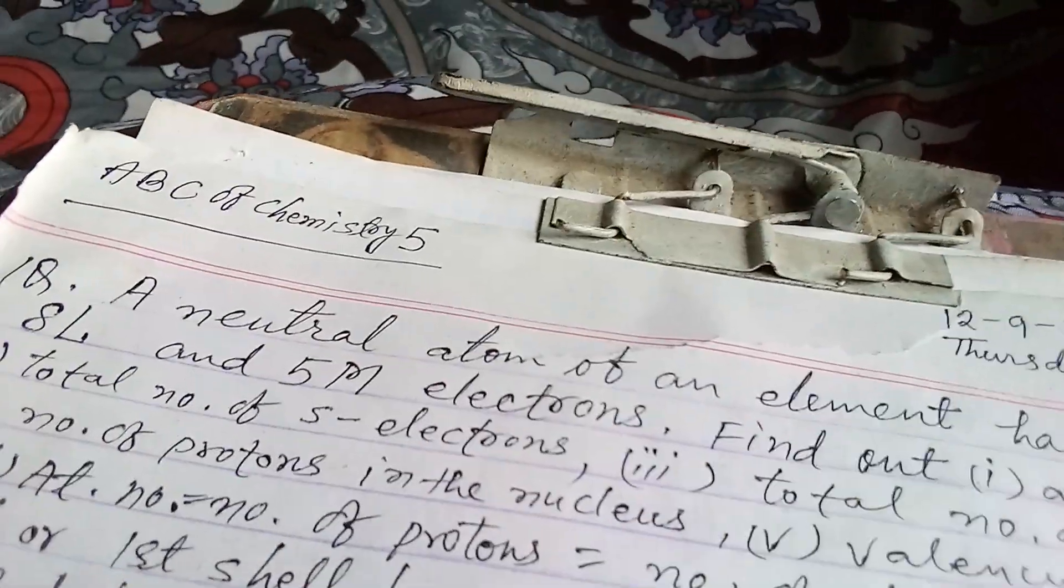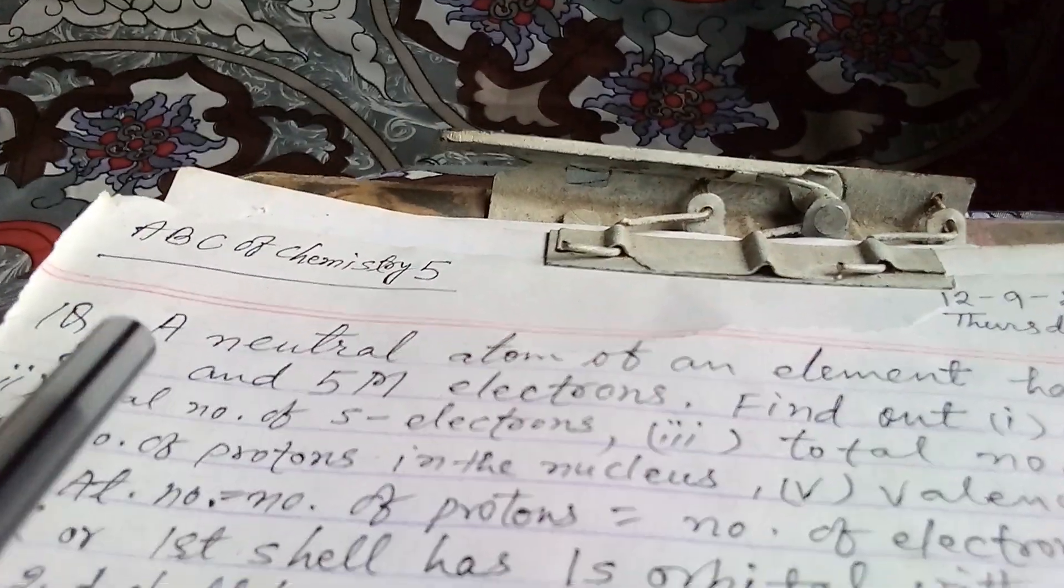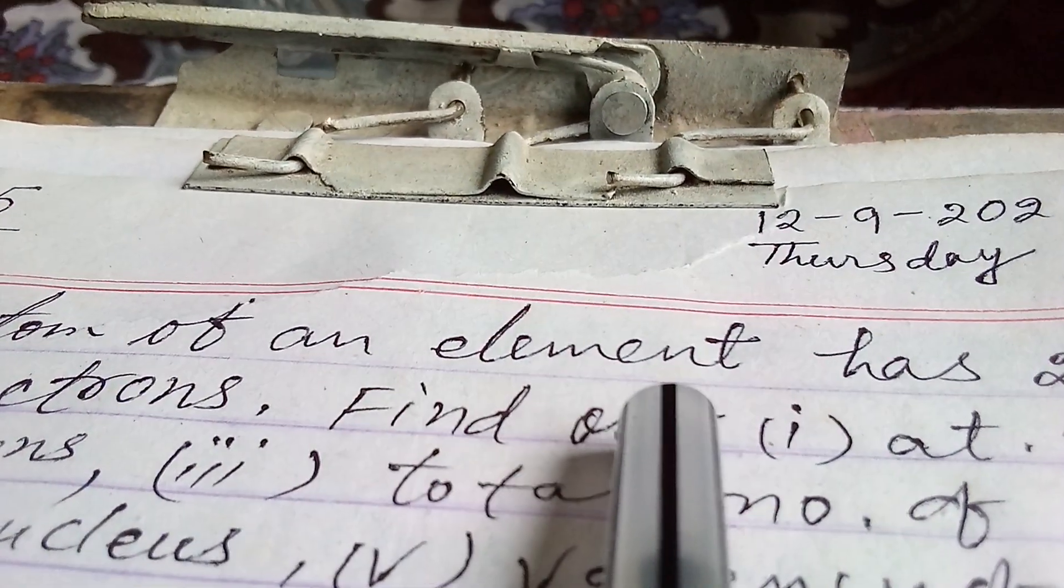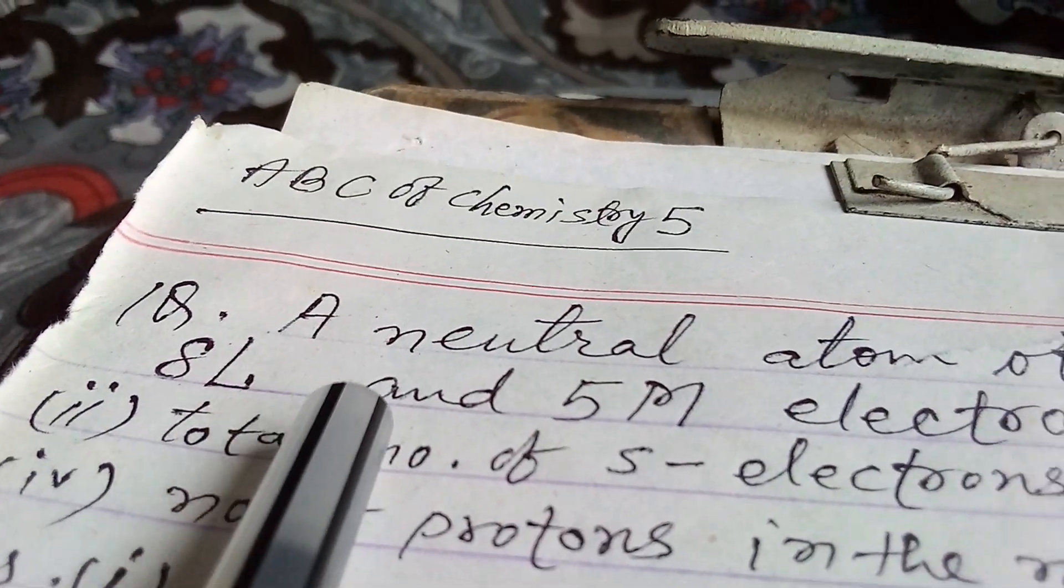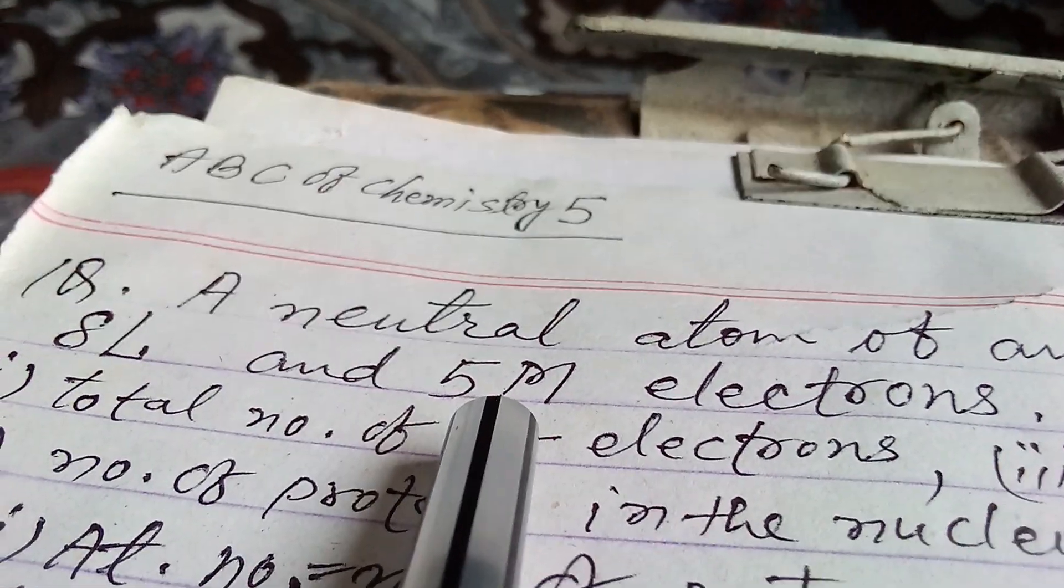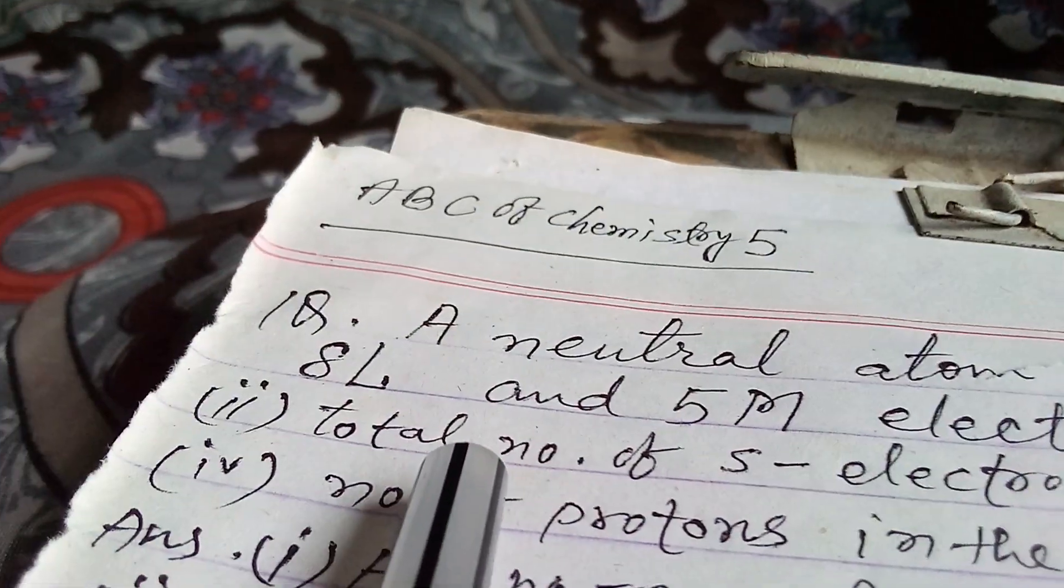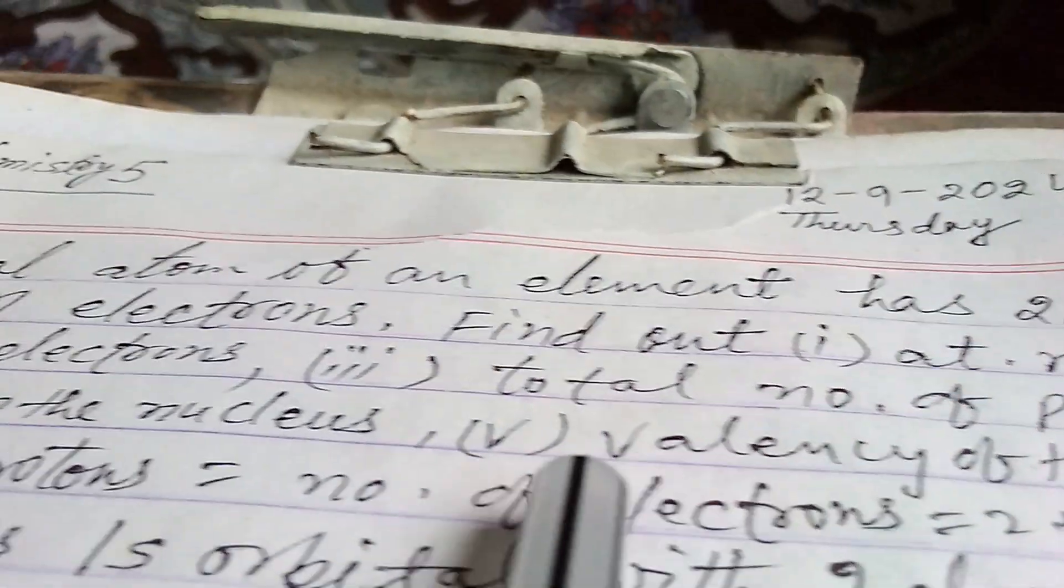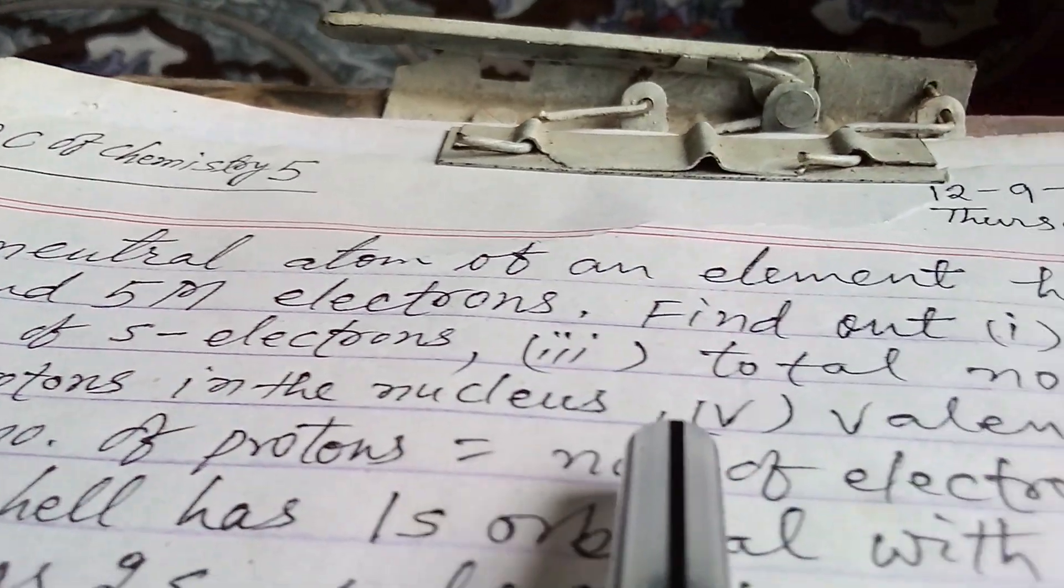Good morning my dear students, today I am going to discuss some questions in chemistry and the topic is ABC of Chemistry 5. The first question is: a neutral atom of an element has 2K, 8L and 5M electrons. Find out atomic number, total number of s electrons, total number of p electrons, number of protons in the nucleus, and valency of the element.